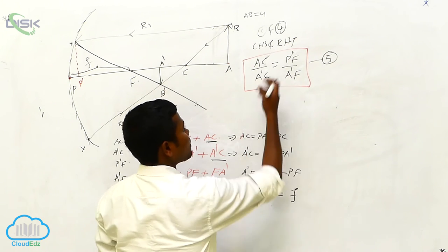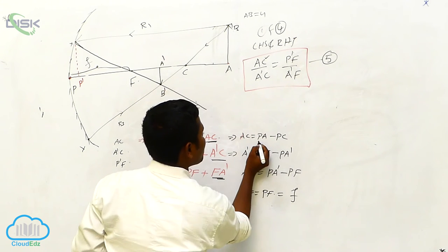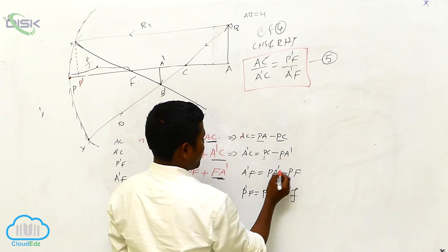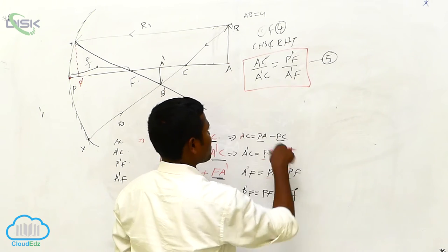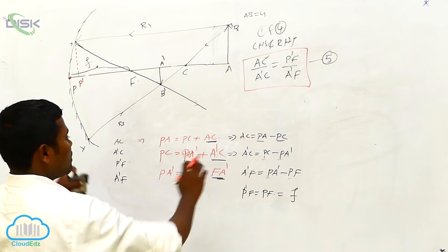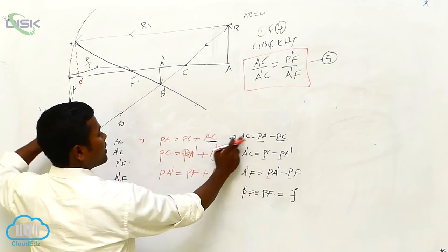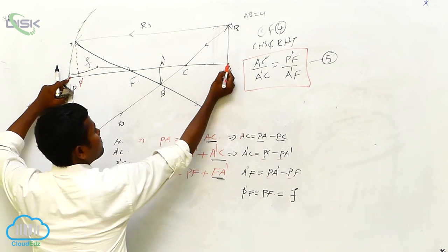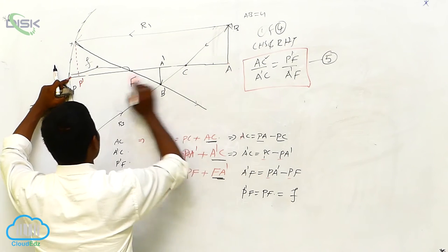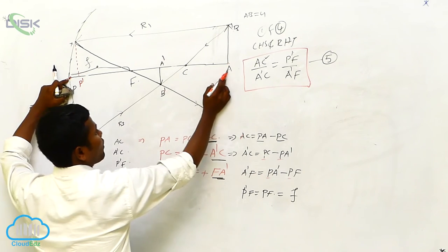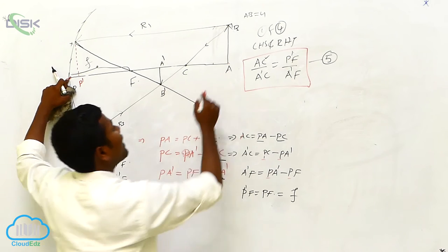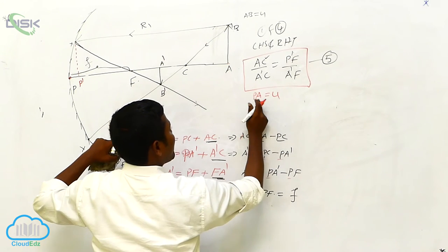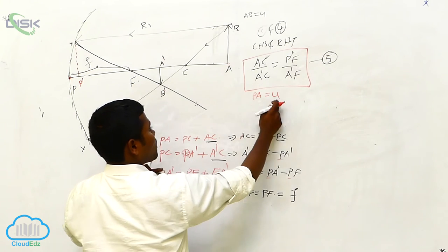Simply I have to substitute these values in the above equation. PA I have to substitute, PC also I have to substitute, PA dash also. Now where is PA? From pole to A — what is at A? Object. So PA is equal to u.